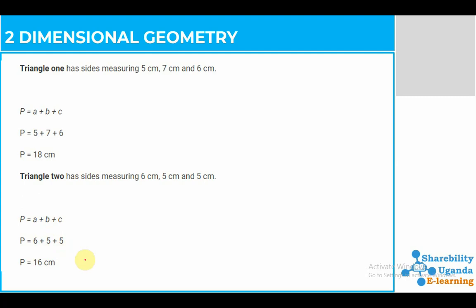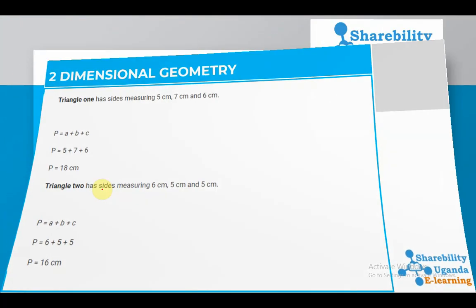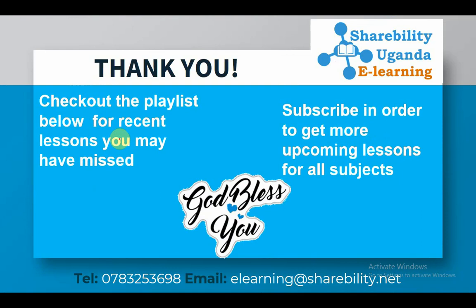That's how we find the perimeter, which is the total distance or measure around any given figure. In simple terms, the total distance around the shape is what we call the perimeter. I hope everyone has understood this. Thank you very much for watching this tutorial. Please check out our recent videos and subscribe to get all video tutorials for all subjects. God bless you, have a good moment.